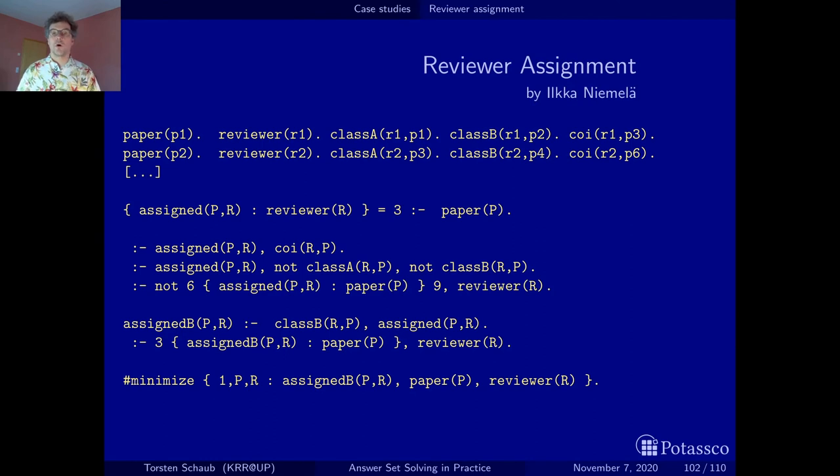Throughout this encoding, we've already been using different variants of cardinality constraints, which are sets of atoms after grounding, along with some syntactic sugar, which enforces that here exactly three elements of the resulting set of ground atoms are added to the stable model. Here we want at least six and at most nine, and here we want at least three.